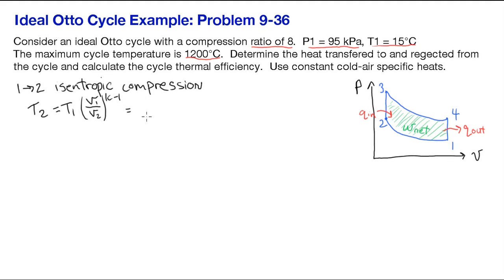So we know the compression ratio and we know the initial temperature. We want to convert that temperature to Kelvin, so 15 Celsius is 288 Kelvin. So we get temperature at state 2 is 661.7 Kelvin.